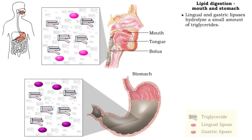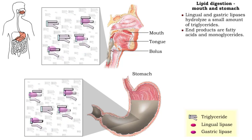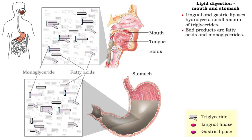Lingual lipase, secreted by glands in the tongue, and gastric lipase, secreted by gastric chief cells, hydrolyze a very small amount of triglycerides into fatty acids and monoglycerides.